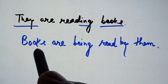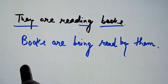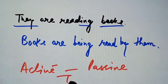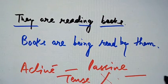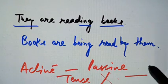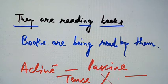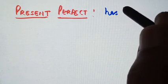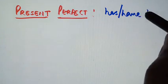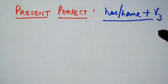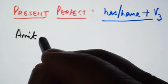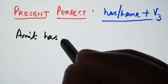We should always remember that while changing from active to passive, we should never change the tense. The tense of the sentence must remain the same — present remains present, past remains past, future remains future. We will never change the tense while converting from active to passive. Next is present perfect, and the rule for present perfect is: has/have plus third form of the verb.